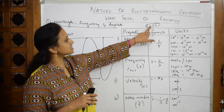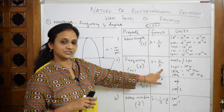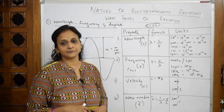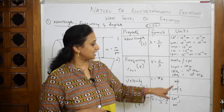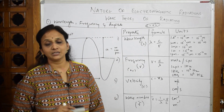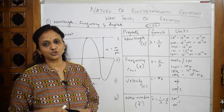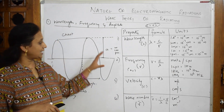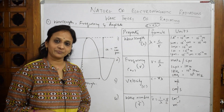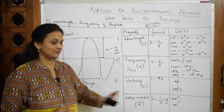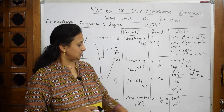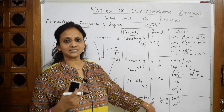For frequency, from the same formula: ν = c/λ. The units for measuring frequency are hertz or cycles per second (cps); one cps equals one hertz. It can also be measured in kilohertz and megahertz. Wave number is the reciprocal of wavelength — nu-bar equals one divided by lambda.